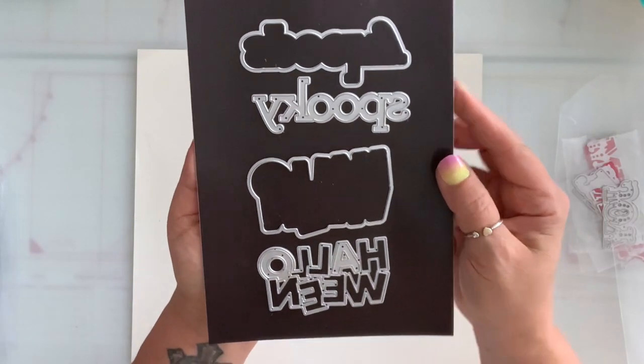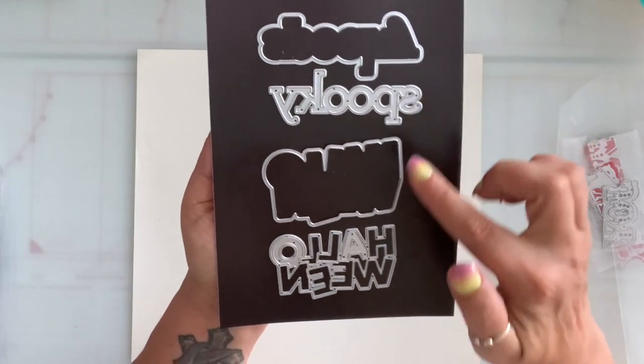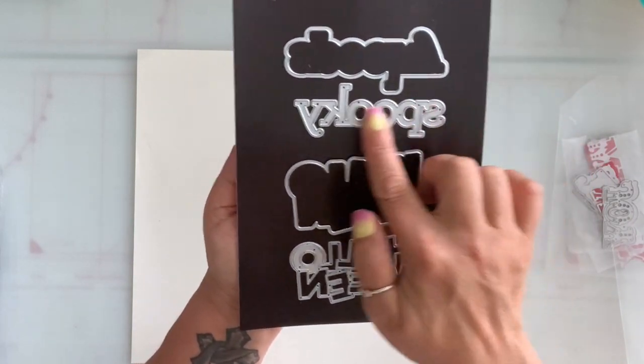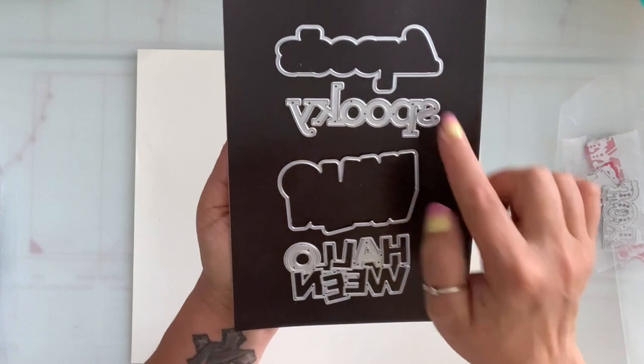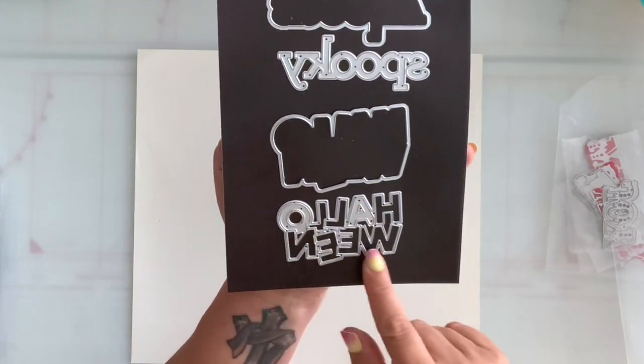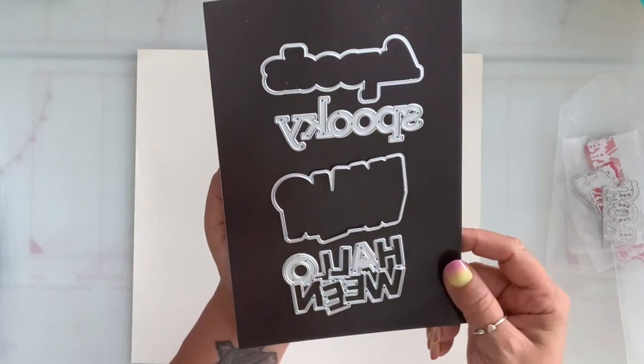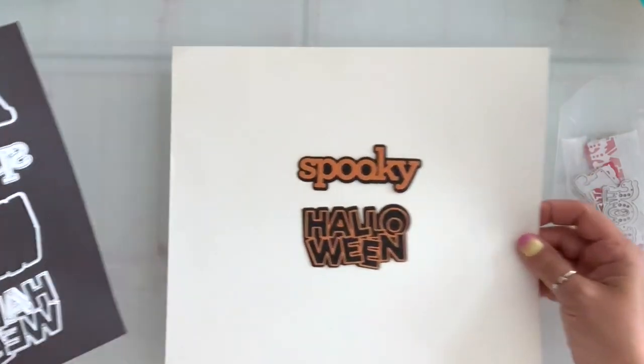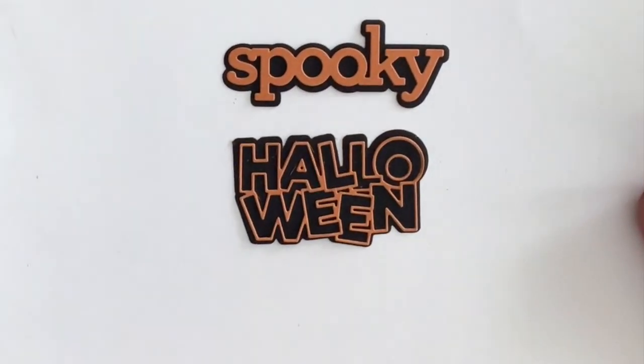I got some word dies and these are Halloween. They're two separate dies. The first one is Spooky with the shadow and this one is Halloween, comes with the shadow and this is what they look like put together.